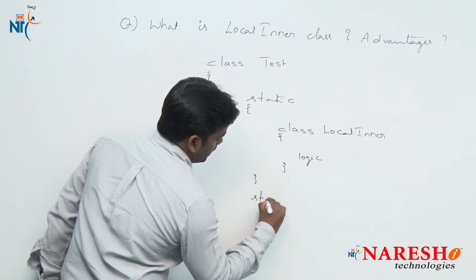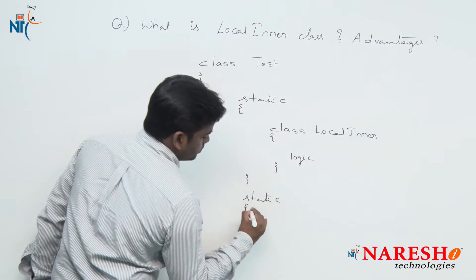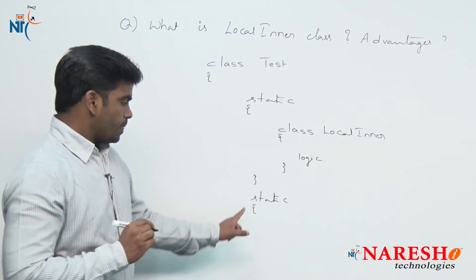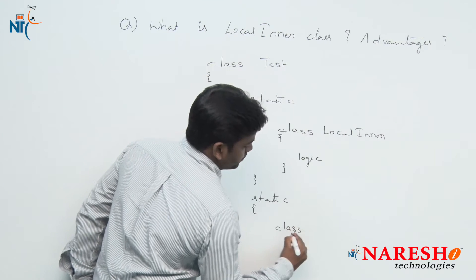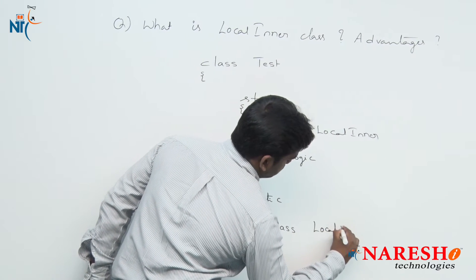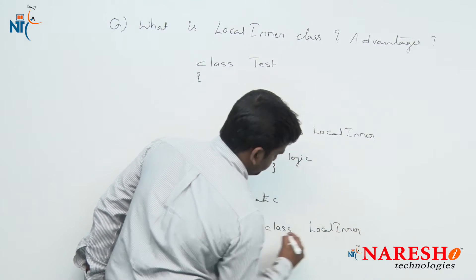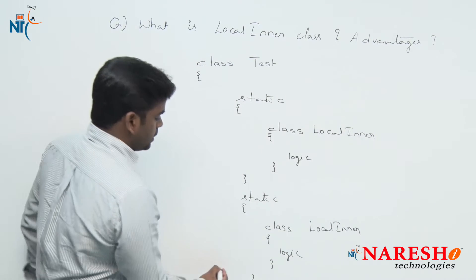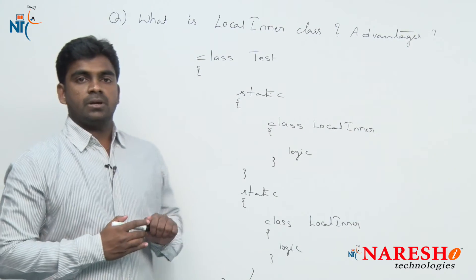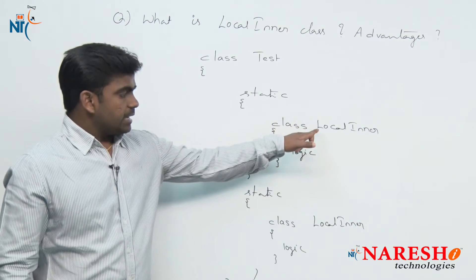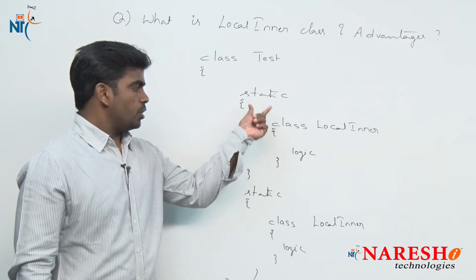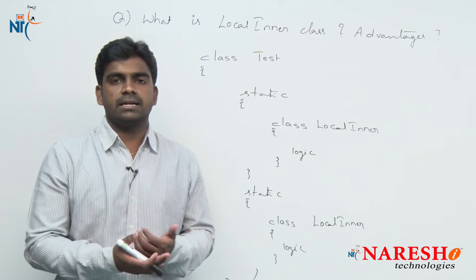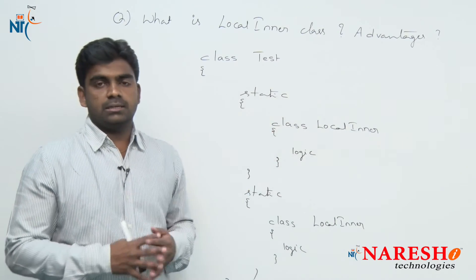Here we are writing one more static block, non-static block, constructor — anything you can write. And inside that block we can write one more class with the same name as a local inner class, with logic inside. So defining a class inside a block is called a local inner class — inside the block, inside the method, or inside the constructor — all come under local inner class.